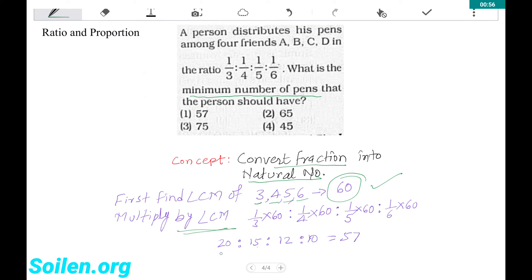It gives us 20, 15, 12 and 10. Now add all this number. It will give 57. So 57 is the minimum number of pens that the person should have. Thank you.